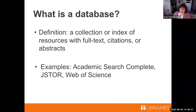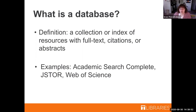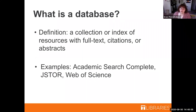The next word we're going to talk about is a database — probably a word you've heard a lot about. A database is essentially a collection or index of different resources. Within the database you might find the full text of a resource, just a citation, or sometimes an abstract, which is a paragraph that summarizes what the resource is about. Examples are Academic Search Complete, JSTOR, and Web of Science. There are also databases for statistical data or primary sources.